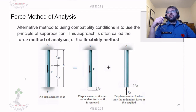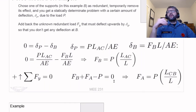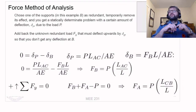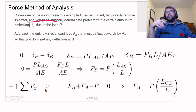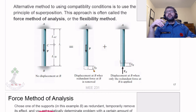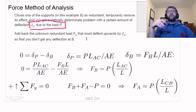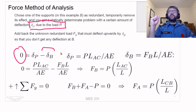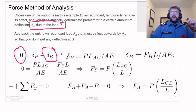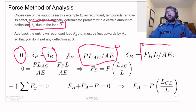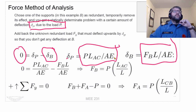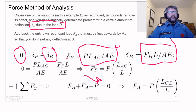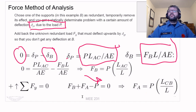In the force method, you temporarily remove one support — say support B — giving you a statically determinate problem with displacement due to just the applied load. The compatibility condition requires zero total displacement at B, so you add back the deflection due to B, with B expected to be pointing up, making it negative. Solving the resulting equations gives the same results. It's a slightly different approach you might be more comfortable with. That concludes our look at the principles of superposition.